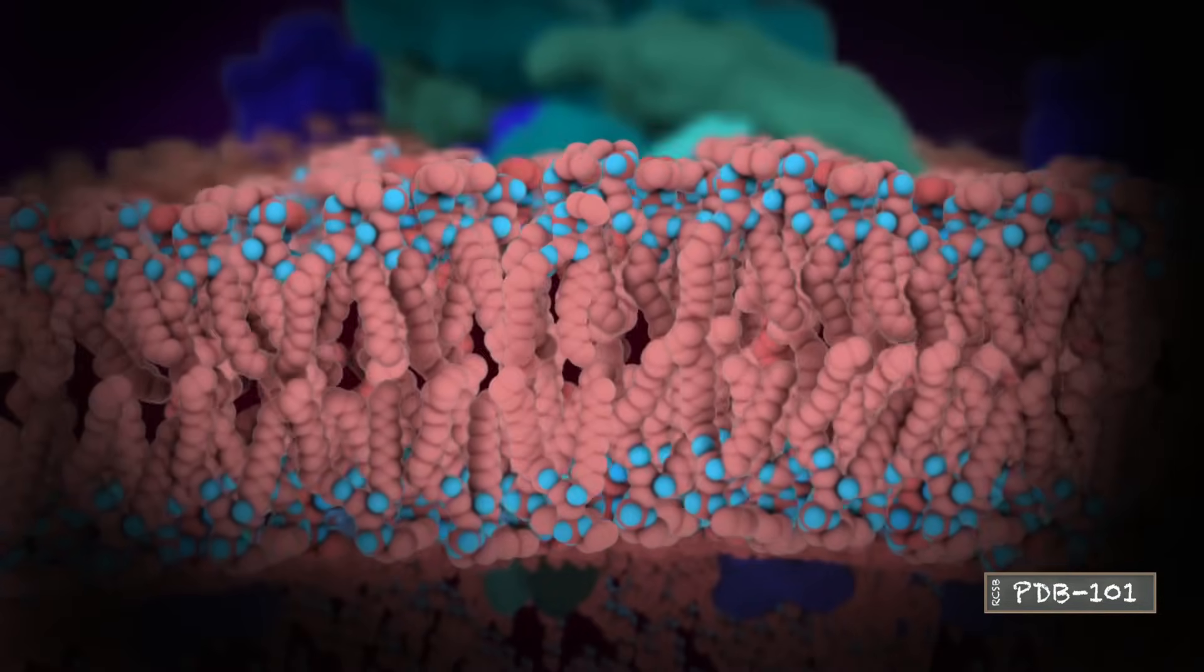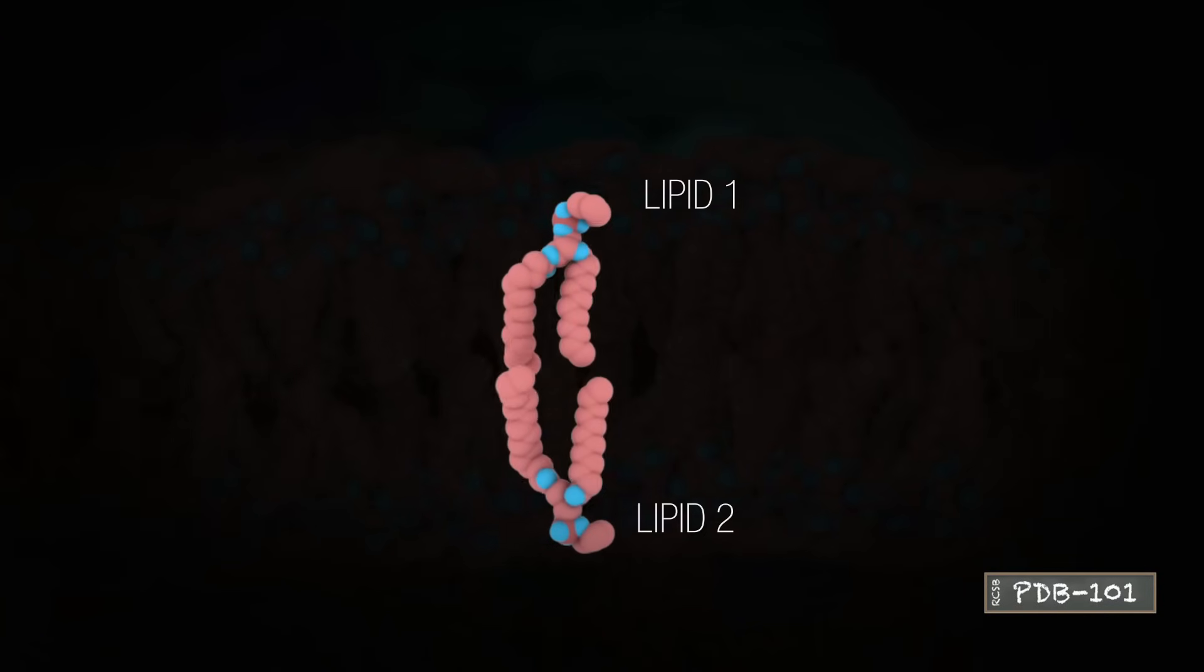In cells and viruses, these lipids are packed neatly into two sheets with the lipid tails facing inward.